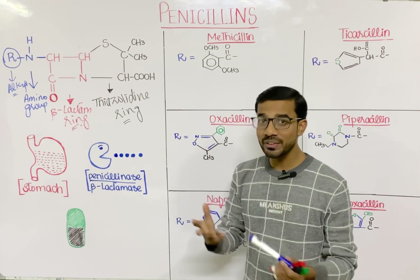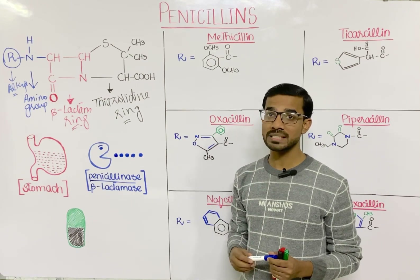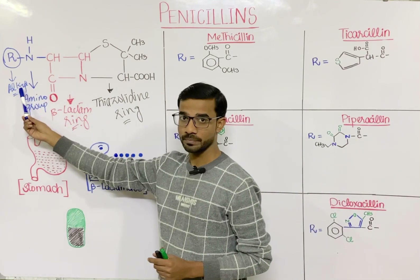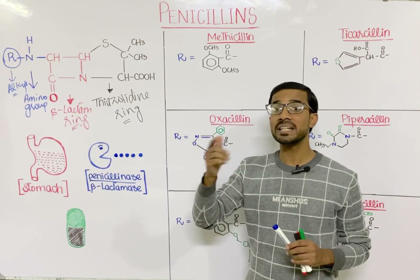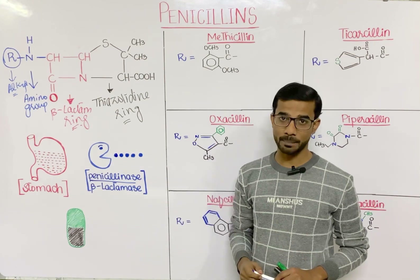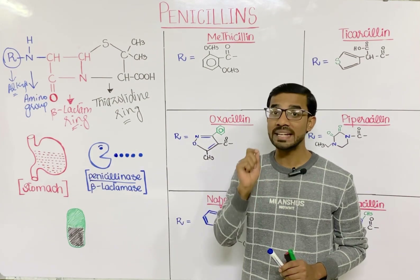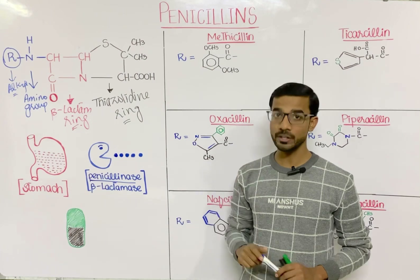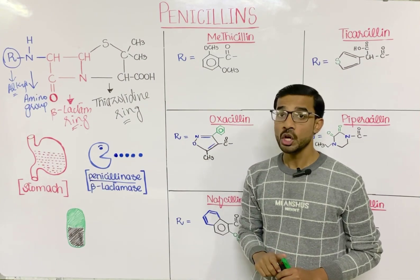What is the difference between the different types of penicillin? That is decided by the alkyl group. The alkyl group will be different in the different types of penicillin, so the basic difference lies in the alkyl group.